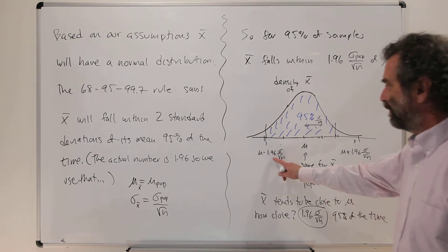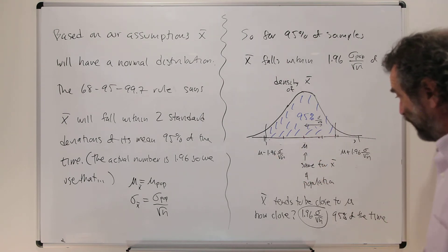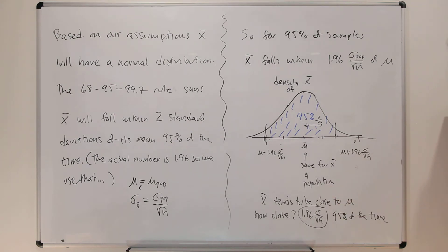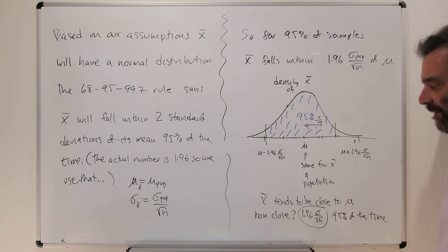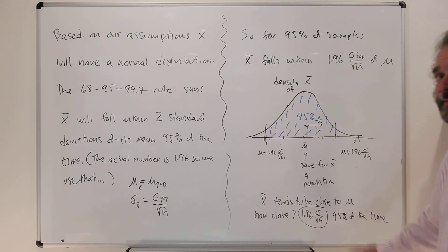Okay, so that's mu minus 1.96 sigma over root n and mu plus 1.96 sigma over root n. And I've got mu there, same for x-bar as the population. It says x-bar tends to be close to mu. How close? Well, within 1.96 sigma over root n of mu. That's because it only happens 95% of the time.